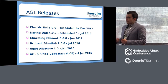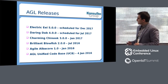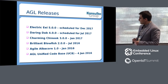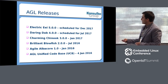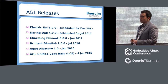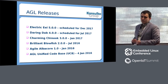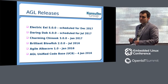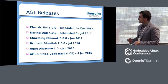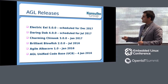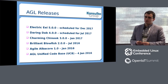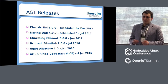AGL provides releases pretty much twice a year. The first release was in January 2016, and in the AGL wiki you can find the exact dates for scheduled releases up to the end of the year. The current release under discussion is release 3.0, which was announced a month ago in January.